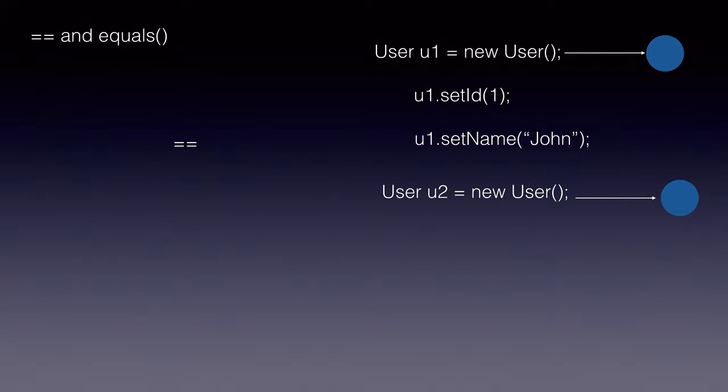Let's take a look at the double equal to operator by creating two objects of user. Here we are creating two instances, u1 and u2, of a class called user, and setting the IDs to 1 and John. Both of them have the same ID and name, but they have their own memory locations on the heap.